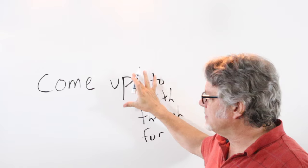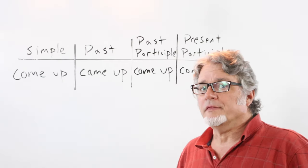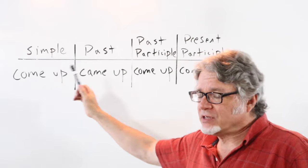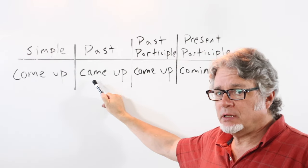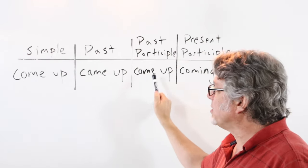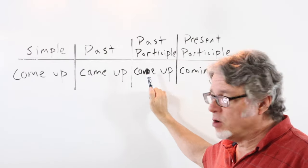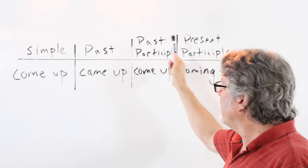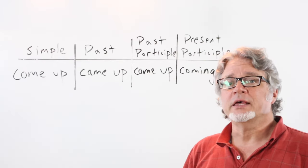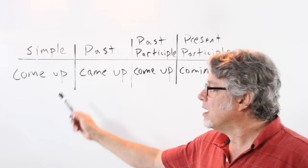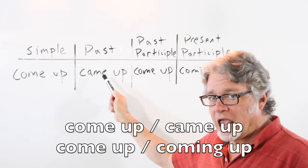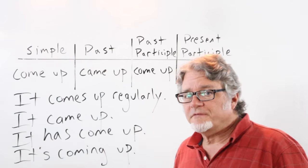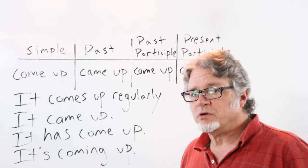The simple form is come up. The past tense is came up. The past participle is come up. Notice that the past participle and the simple form are the same. And the present participle is coming up. Come up, came up, come up, coming up.